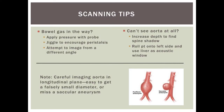Some scanning tips to summarize: if bowel gas is in the way, apply pressure with the probe and encourage peristalsis. Try different angles to avoid bowel. You can roll a patient to the left side and use the liver as an acoustic window over the aorta. It's easy to get a falsely small diameter or miss a saccular aneurysm, so make sure you visualize the entire aorta, especially in the long axis. Hopefully you have a good time scanning in the family medicine outpatient clinic.